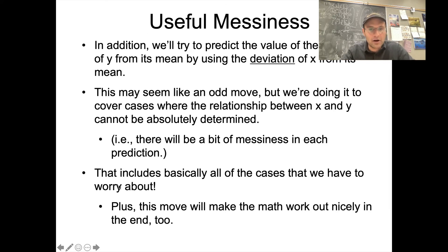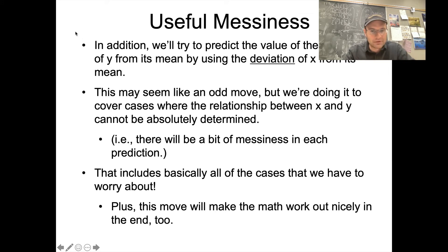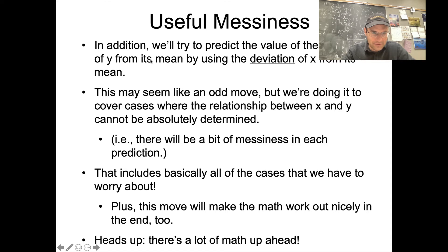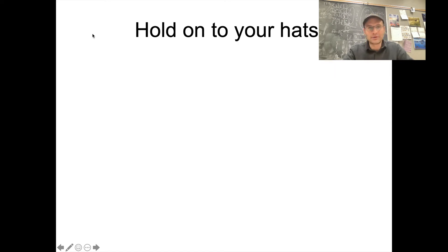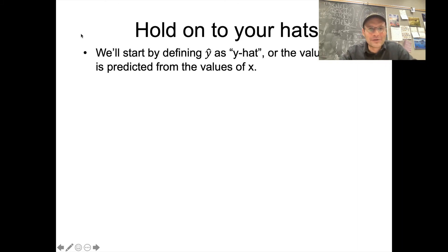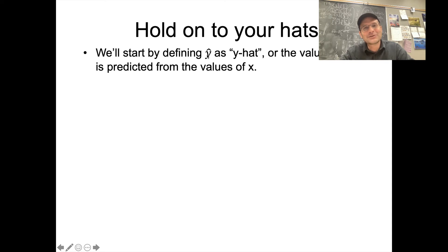We're going to start off the process by defining a new notation: Y-hat — that's a Y with a circumflex accent on top, which in stats and math we call 'Y hat,' like Y's got a hat on it. What that means is these are the predicted values of Y. In this case, we're going to be predicting these values of Y from the values of X that we already have — that's our known data, our independent variable.